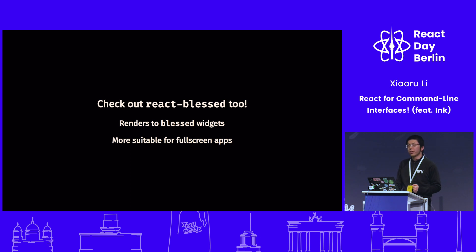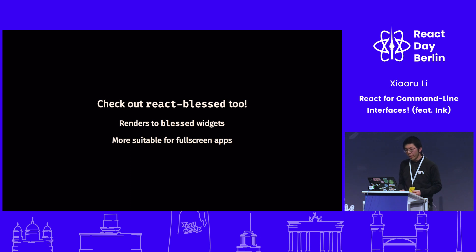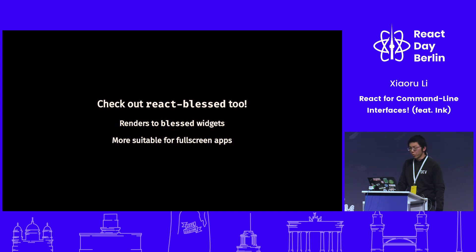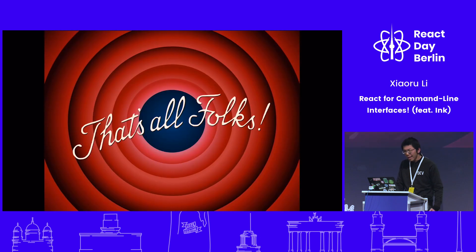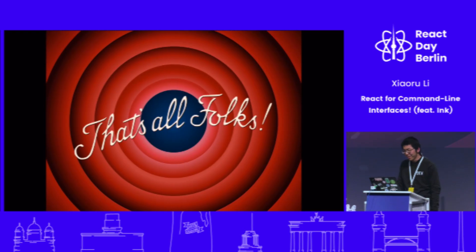There's also another library called React Blessed, which allows us to render our components to Blessed widgets. Blessed is basically a widget library for Node where you can build full-screen apps. So for example, if you want to build something like a text editor, React Blessed would be a good idea. And that's all I have for you today — I hope you find it useful.